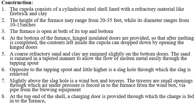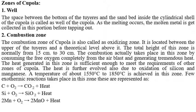The tuyeres are small openings through which air under pressure is forced into the furnace from the wind box via pipe from the blowing equipment. At the top of the shell, the charging door is provided on the right side, through which the charge is fed into the furnace. The well zone is the space between the bottom of the tuyeres and the sand bed inside the cylindrical shell; melted metal collects here as a liquid metal storage area.